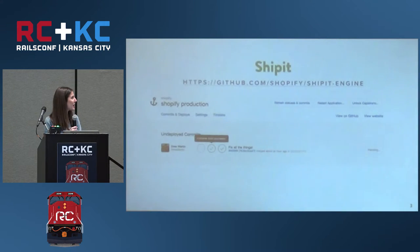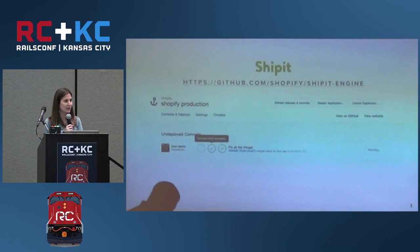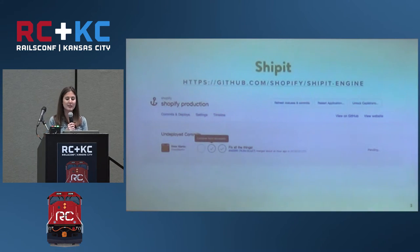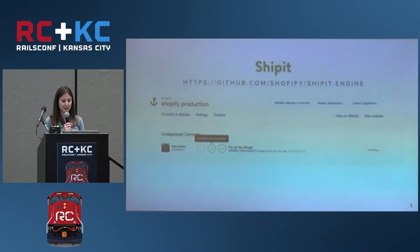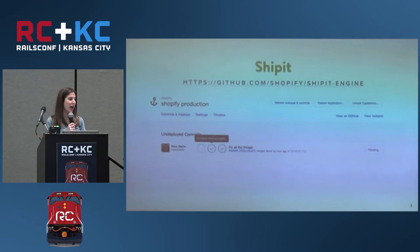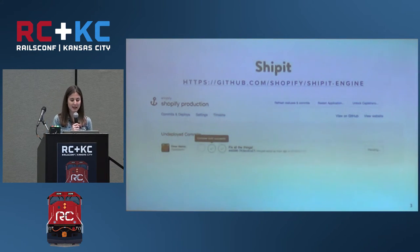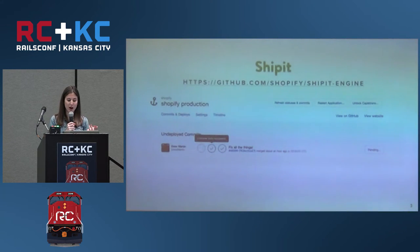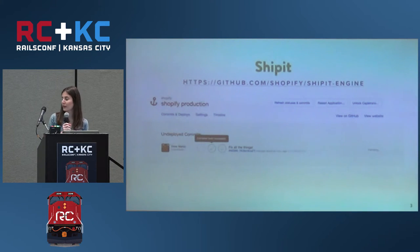What we use to deploy Shopify is a little something called Ship It. Ship It is actually open source — if you go to github.com/shopify/shipit-engine, you can see it there. What it allows us to do is: on GitHub, when you make your PR and merge it to master, it shows up in Ship It. It has some checks there, like whether the container build is successful, and once all those checks pass, you can deploy your commit.